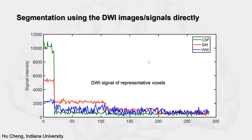The signal response to diffusion-sensitizing gradients is also distinct for gray matter, white matter, and CSF. This figure shows DWI signals of representative voxels for CSF, gray matter, and white matter — they are quite different. CSF has a large drop, while white matter shows much larger fluctuation compared to CSF and gray matter. Therefore, it is possible to classify tissue solely based on the DWI signal.